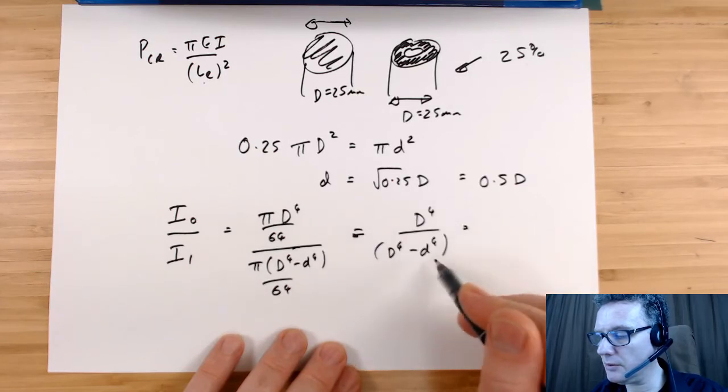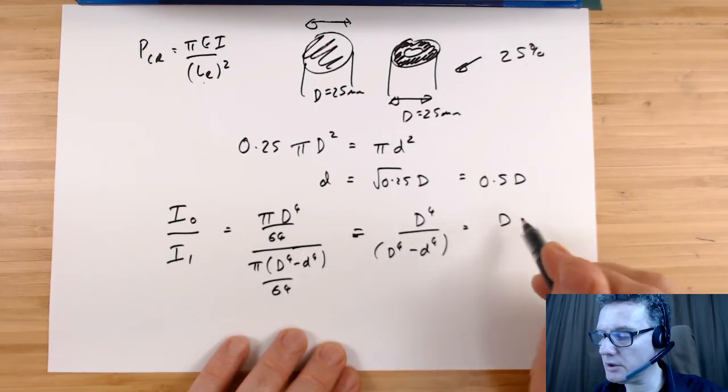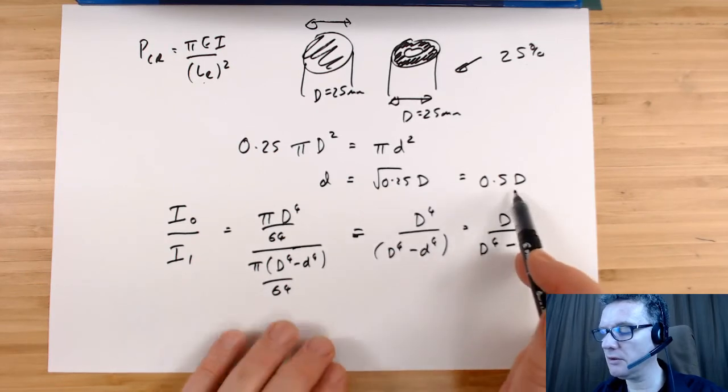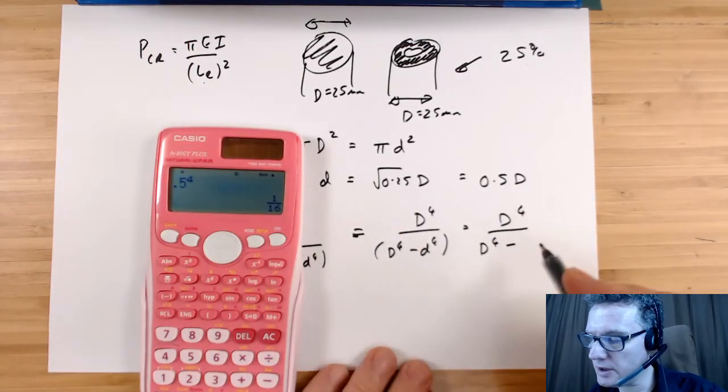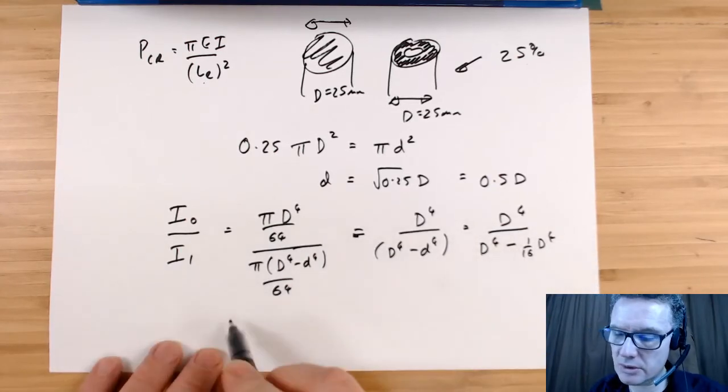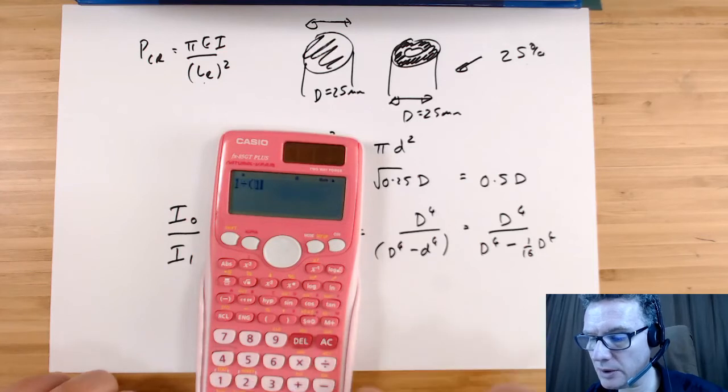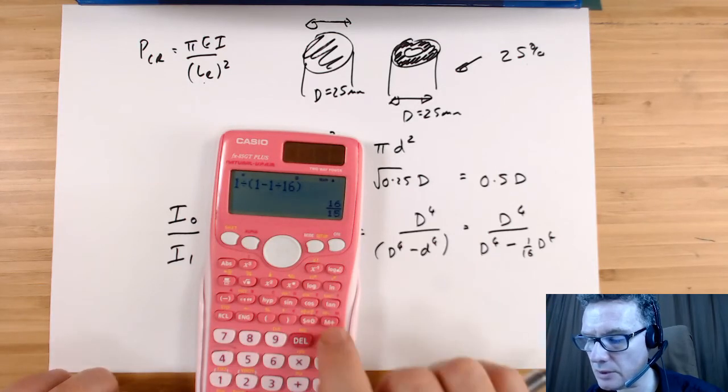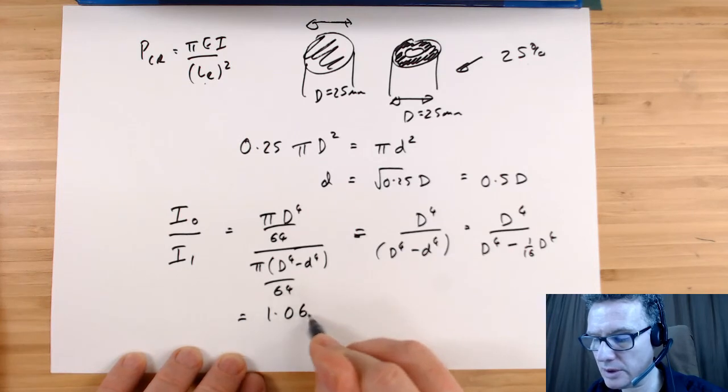We know that little d is 0.5 of D, so we don't even need to know what the diameter is. We've got D to the 4, and that gives me D to the 4 take away—replace the little d to the 4—so 0.5 to the power 4 is 1/16, so 1/16 D to the 4. All those D to the 4's will cancel, and we end up with 1 divided by 1 take away 1/16. Let's work out what that is: 1.0667.